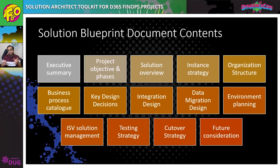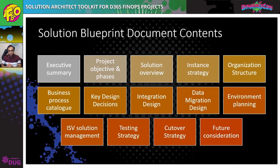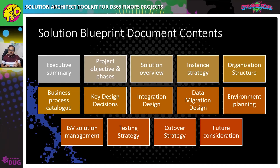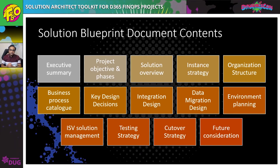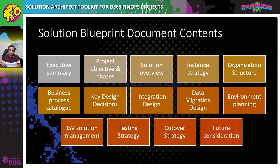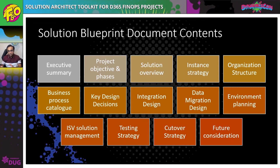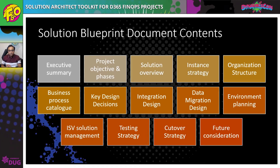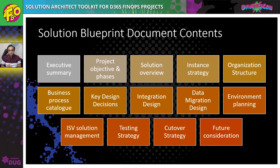In my experience, the solution blueprint document is around 40 to 50 pages. Some companies also make a PowerPoint file which is easy to read, but the objective is to cover all key areas in a summarized way. Key design decisions are those decisions which, if changed, can have a bigger impact on the project. This could include things like how many tenants are used, whether you use a non-production tenant, whether you use product variants, or whether you use advanced warehousing — these should be decided early and captured in the blueprint.